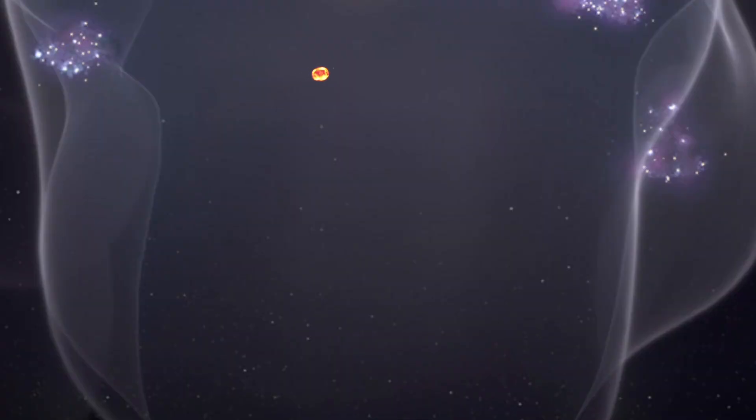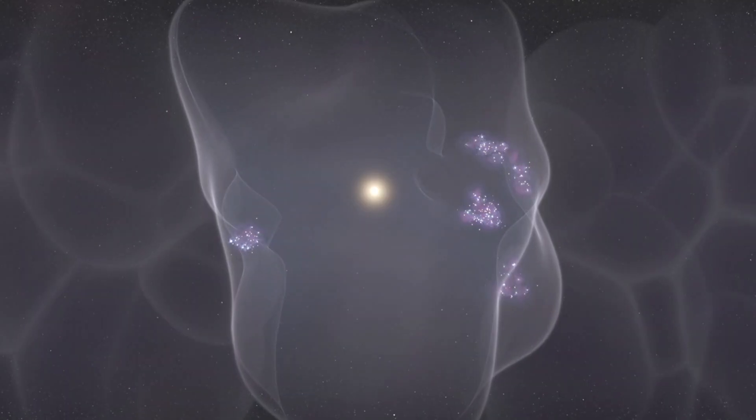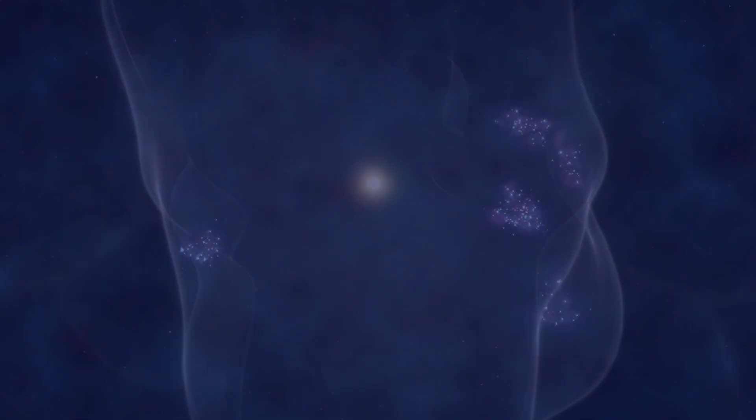And the solar system will continue traveling through the local bubble for another 10 million to 20 million years. But over time, the bubble will disperse, and its shell will fragment the rest of the interstellar medium flowing in to fill the void. Millions of years from now, you would never know the drama of what happened there.